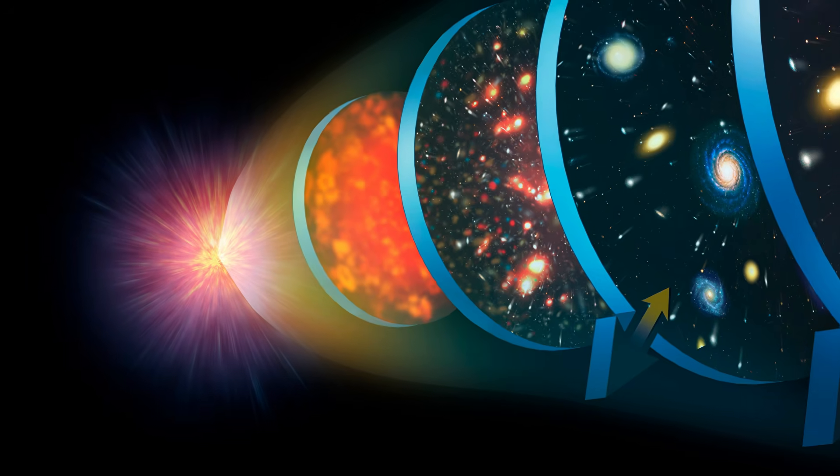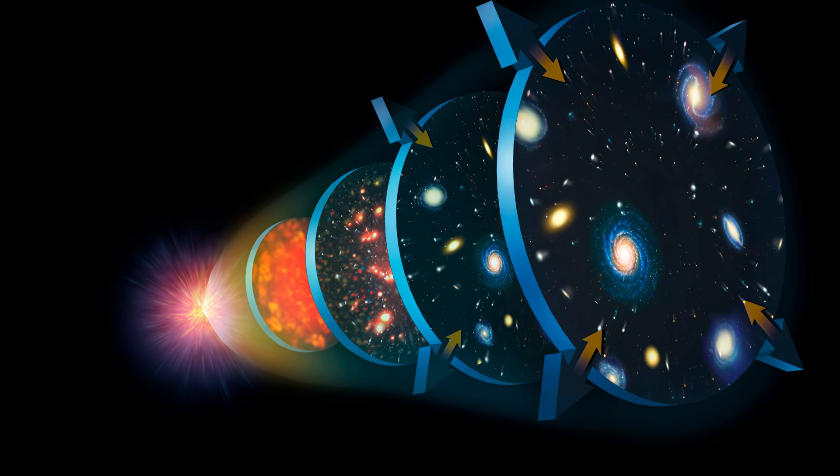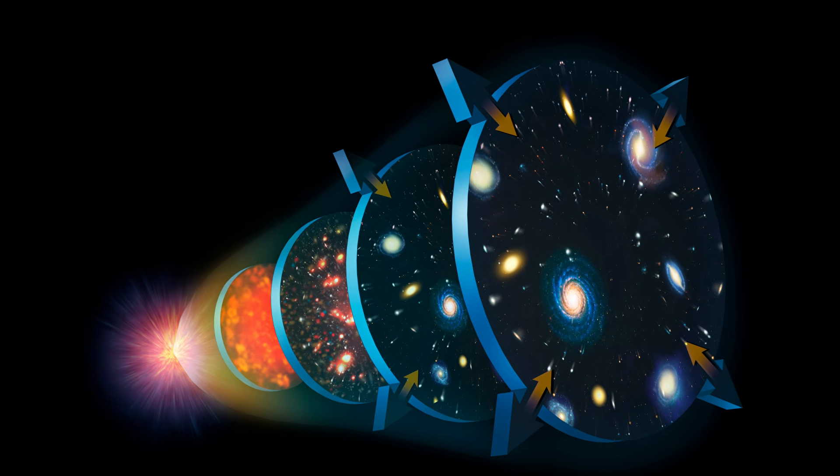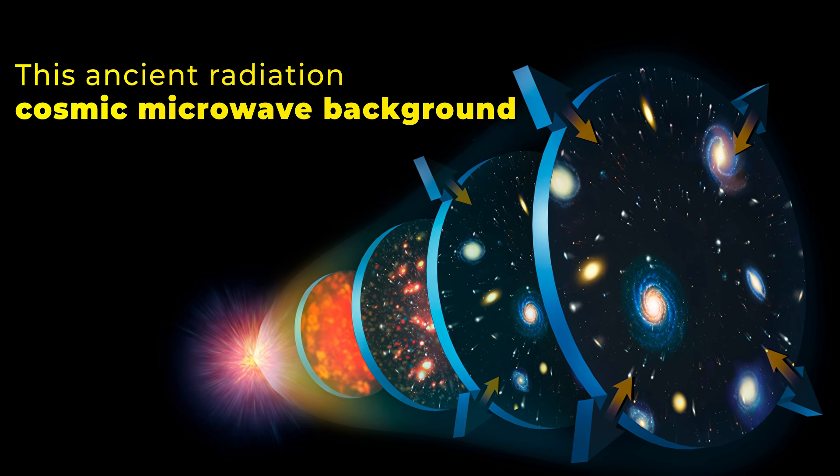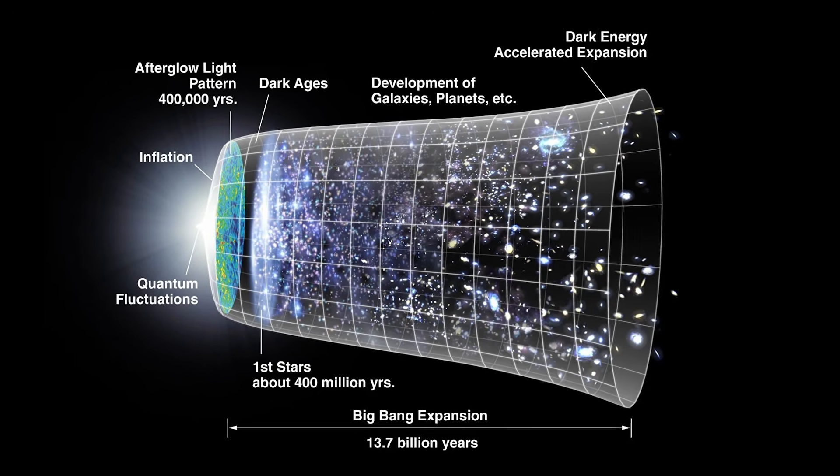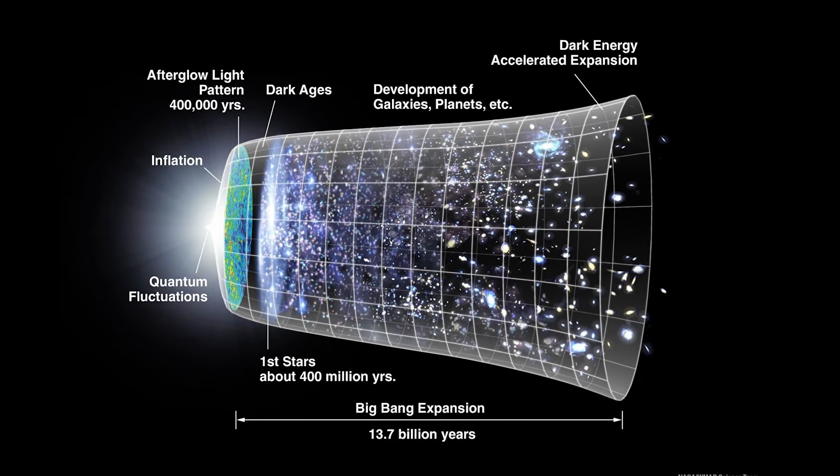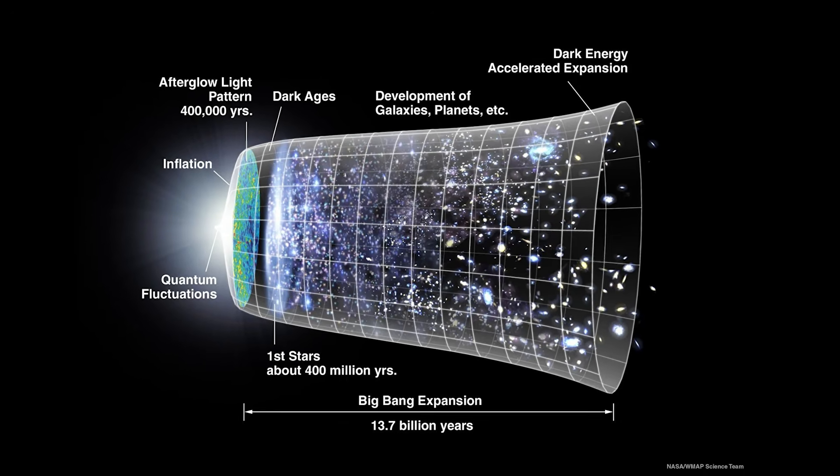This signal did not come from stars. It did not come from galaxies. It came from the universe itself. This ancient radiation is known as the cosmic microwave background. It is the first light ever released, the moment when the universe cooled enough for photons to travel freely through space.